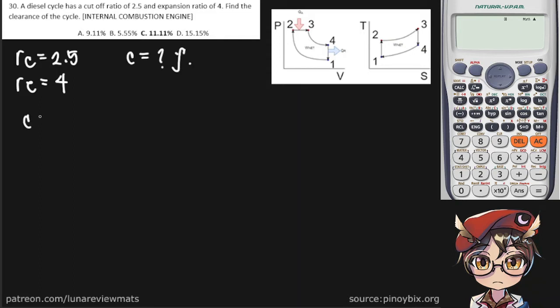The clearance can be found by using this formula: 1 over the compression ratio r sub k minus 1. And r sub k can be found by multiplying cutoff ratio by expansion ratio.